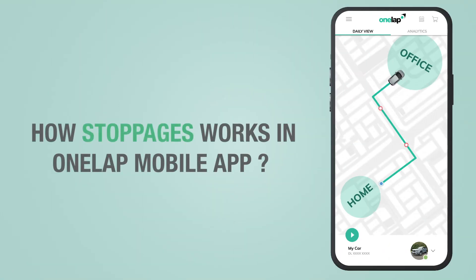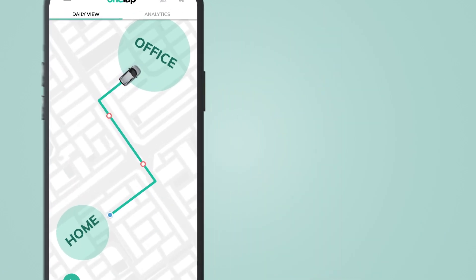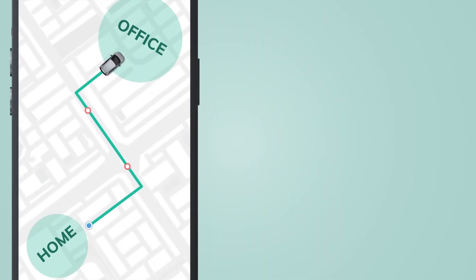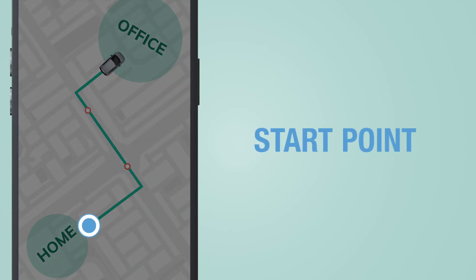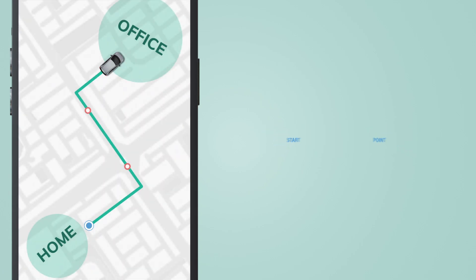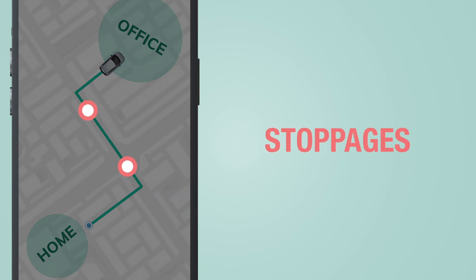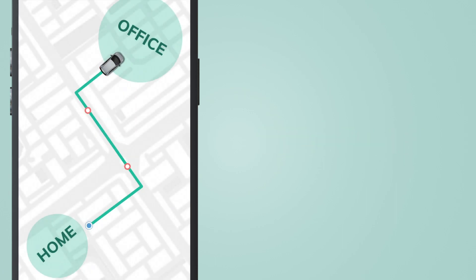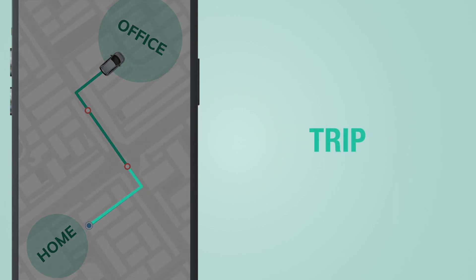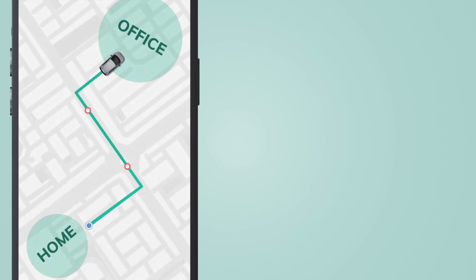How stoppages work in the One Lap mobile app. When you look at the complete journey of the day, you can see a few different icons on the map. This blue dot is the start point of the day. These red dots are the stoppages. The path between any two points is called a trip.